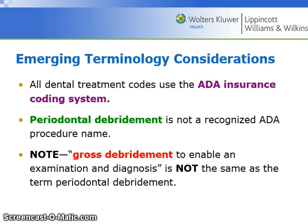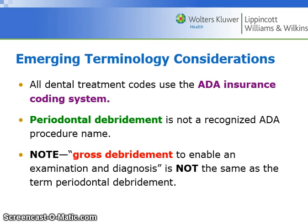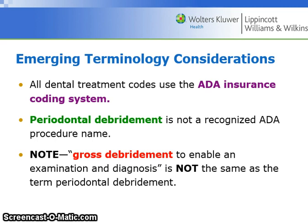All dental treatment codes use the American Dental Association insurance coding system. Periodontal debridement is not a recognized ADA procedure name. Note: gross debridement to enable an examination and diagnosis is not the same term as periodontal debridement. Gross debridement is intended for people who have so much calculus buildup that you cannot even perform a simple probing test.